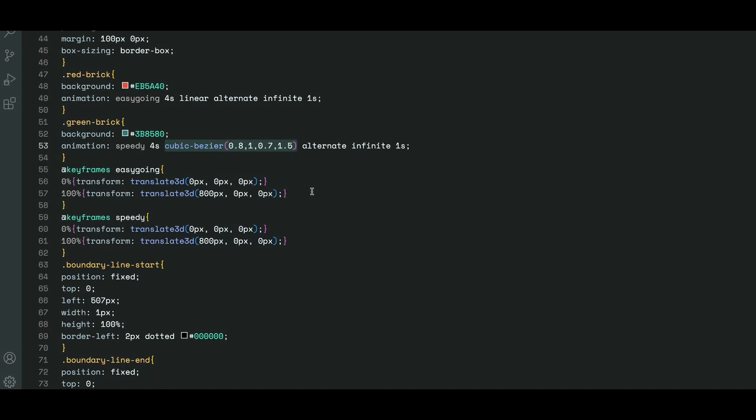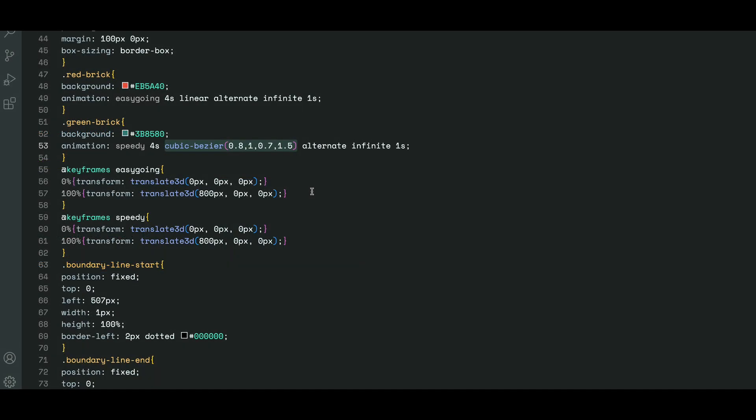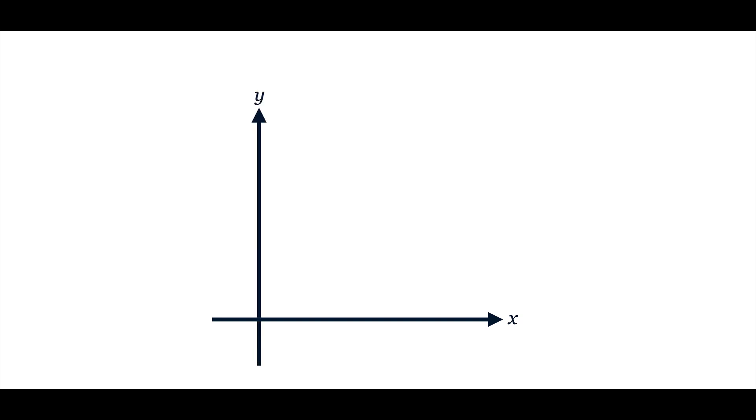So, how does a Cubic Bezier work? The four numbers are actually x and y coordinates on a graph. If we draw out our standard graph with axes, we will see that the horizontal x-axis is actually the time parameter.